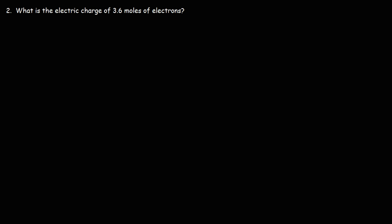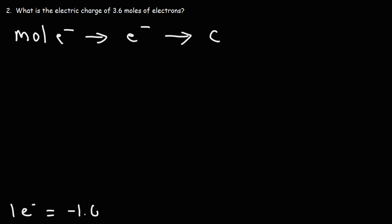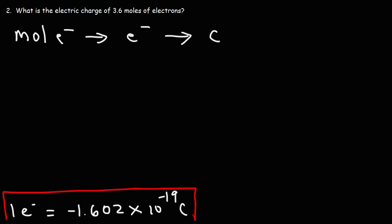What is the electric charge of 3.6 moles of electrons? Feel free to pause the video if you want to try this problem yourself. This is going to be a double conversion problem. We're going to convert moles of electrons to number of electrons, and then convert that to electric charge in coulombs. We know one electron has a charge of negative 1.602 times 10 to the negative 19 coulombs.